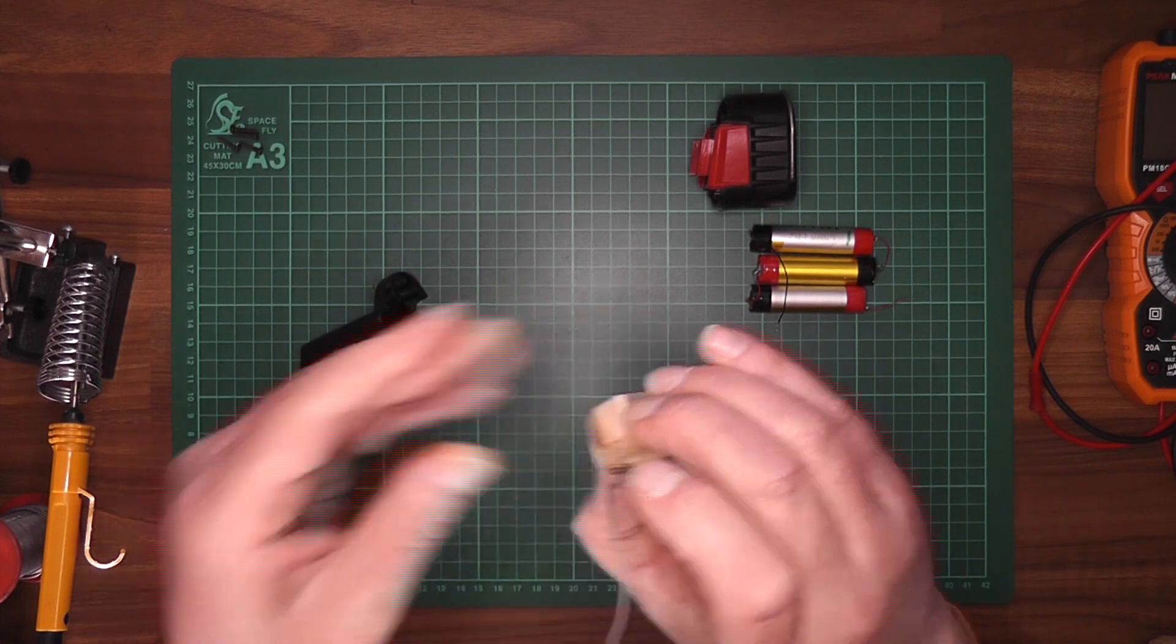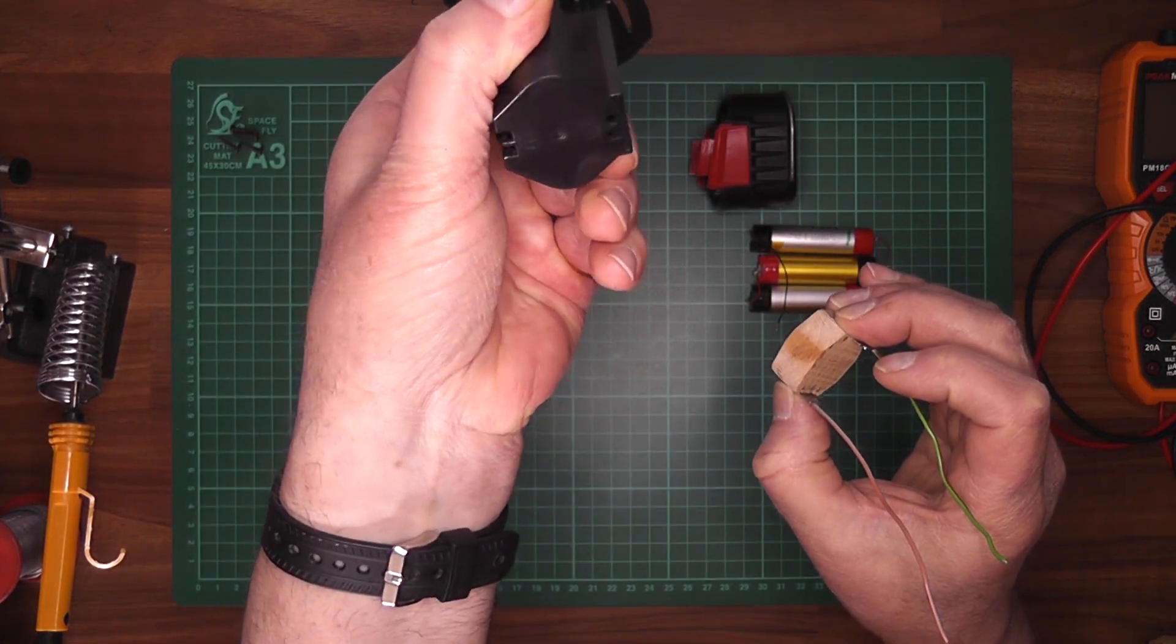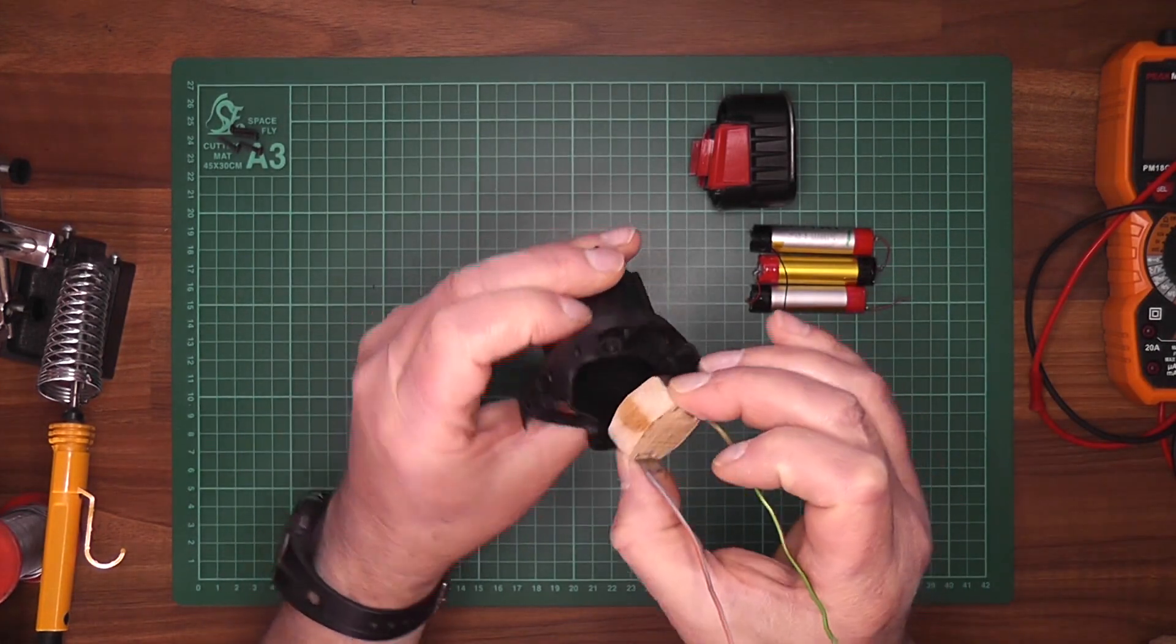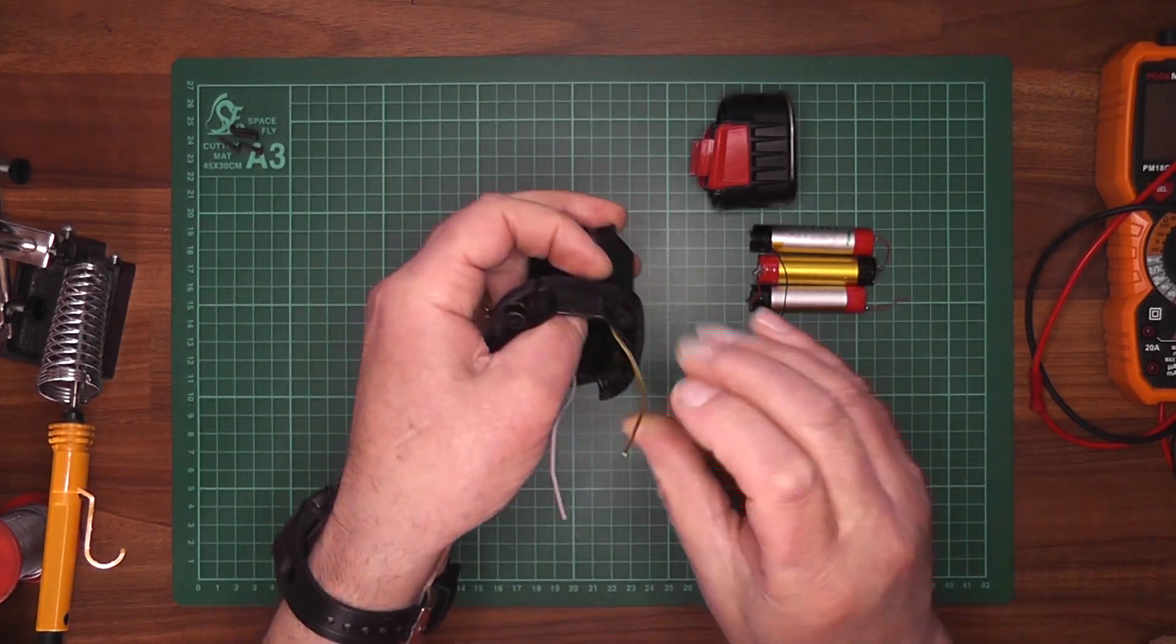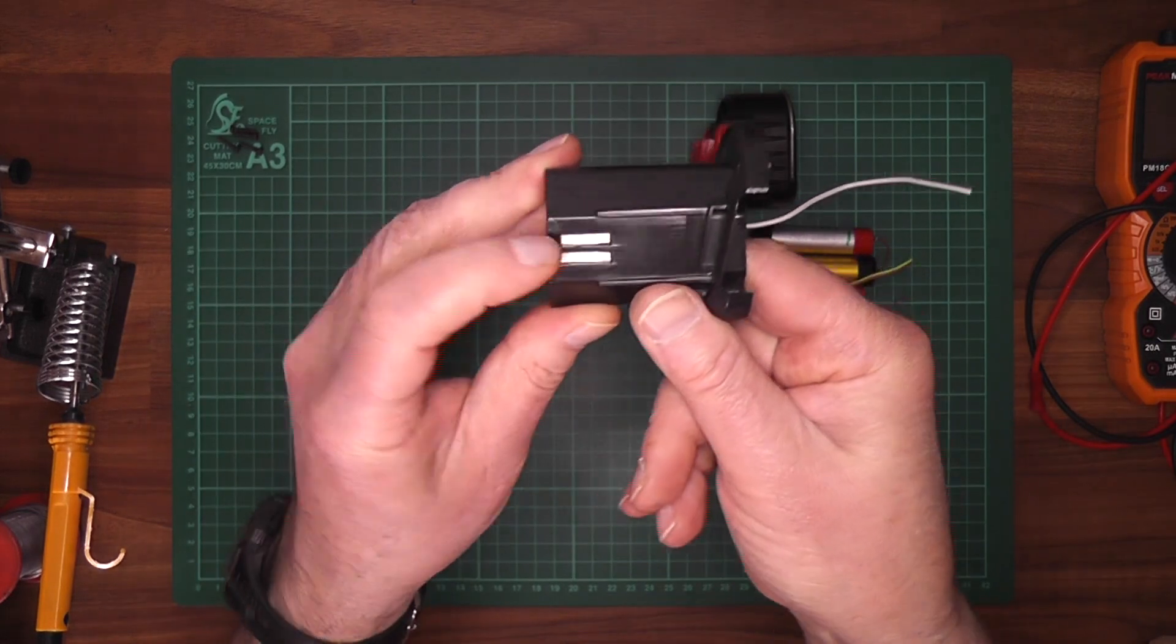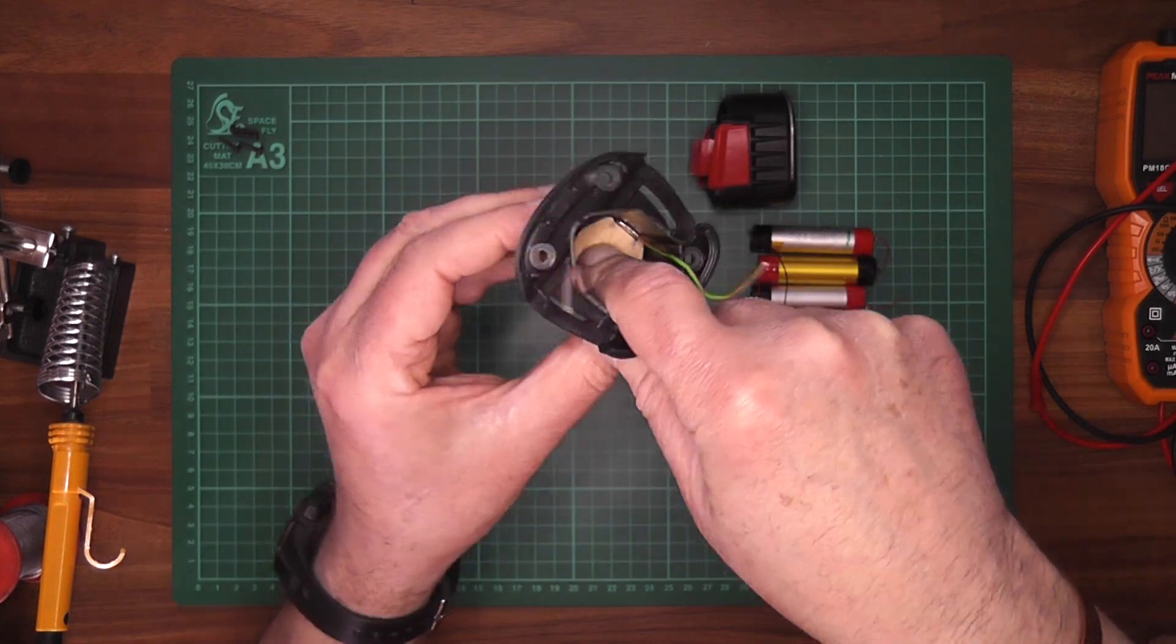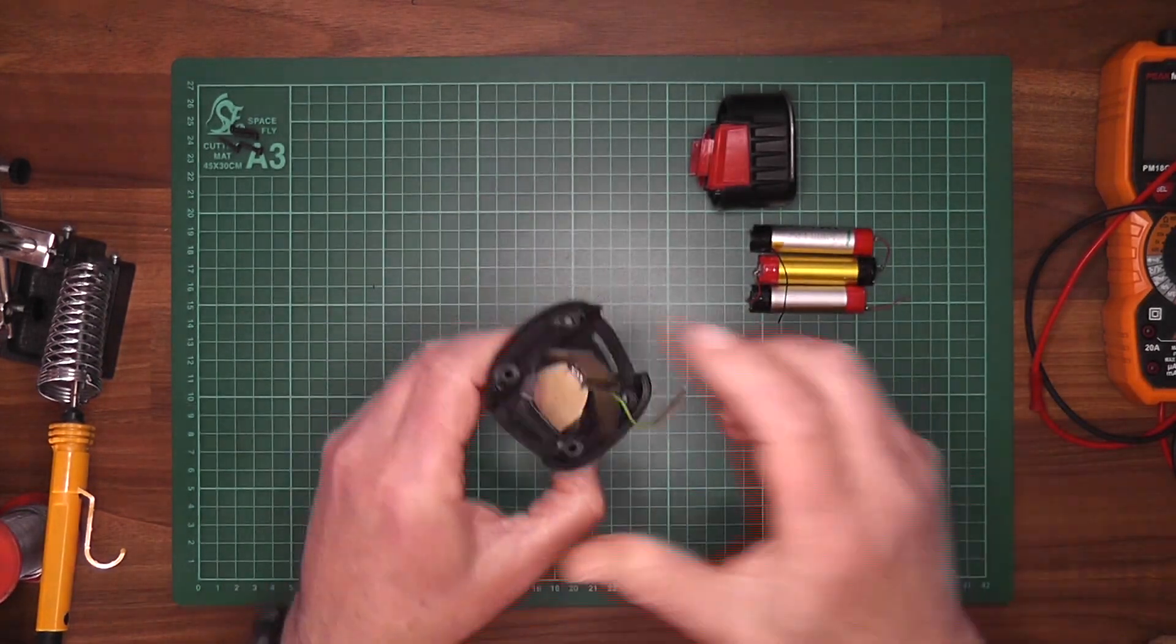And then what we do is we'll just find out which is plus. That's the plus, and they'll just sit down in. And then you can see the little contacts are in the right place on both sides now, adding that onto the battery.